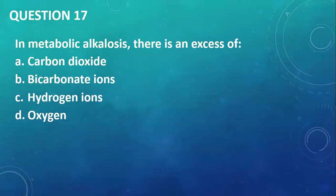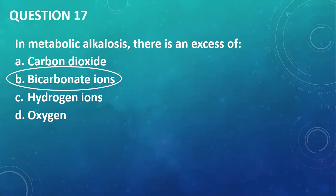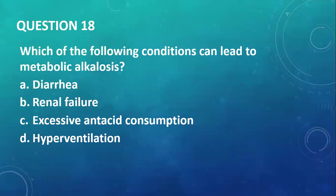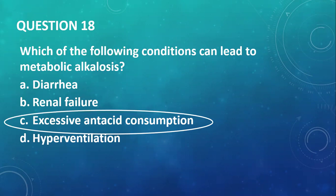Question number seventeen: in metabolic alkalosis, there's an excess of bicarbonate ions. Question number eighteen: which of the following conditions can lead to metabolic alkalosis? In metabolic alkalosis, you're losing hydrogen ions or gaining bicarbonate. Diarrhea means you're losing bicarbonate — no. Renal failure can't get rid of acids — no. Excessive antacid consumption — yes, you're gaining bicarbonate or taking substances that generate bicarbonate. So the answer is excessive antacid consumption.